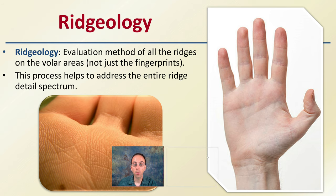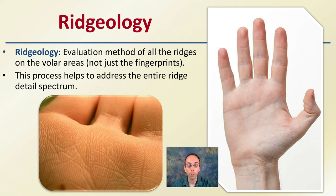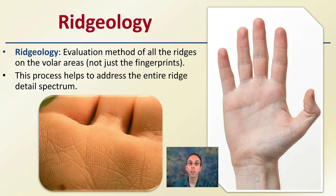Ridgeology is the general term here — it's an evaluation method of all ridges on the volar areas, not just fingerprints. This process helps address the entire ridge detail spectrum. For example, palms are another area where ridges can come into play and can be important for identifying or eliminating a potential suspect.